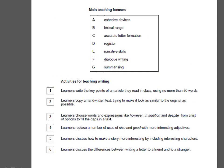Now you are sure about all the definitions. Let's match them to the numbers. Number 1: Learners write the key points of an article they read in class using no more than 50 words. This is summarizing, as students rewrite or retell a long text in a short and clear way.